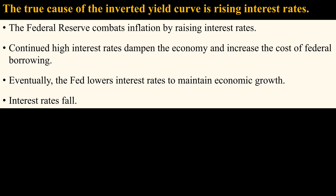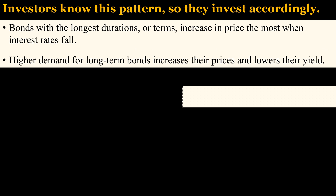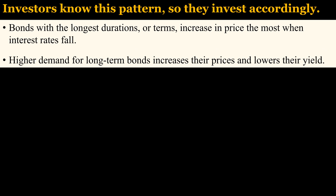So interest rates fall. Investors know this pattern, so they invest accordingly. They buy bonds with the longest durations or terms because these increase in price the most when interest rates fall. That higher demand increases long-term bond prices and lowers their yield. And this is what explains the inverted yield curve.